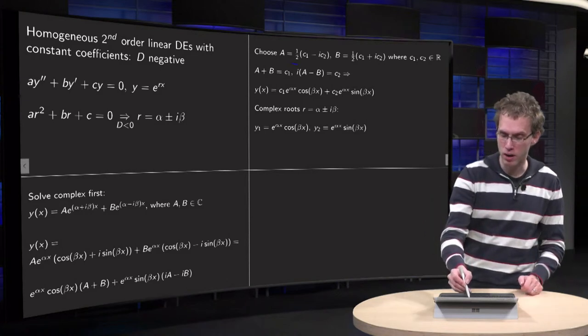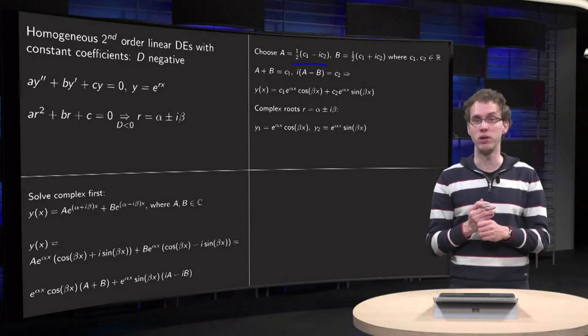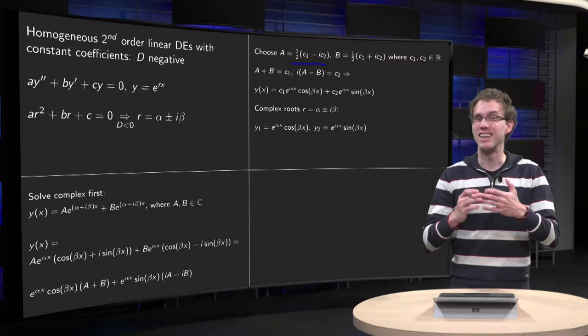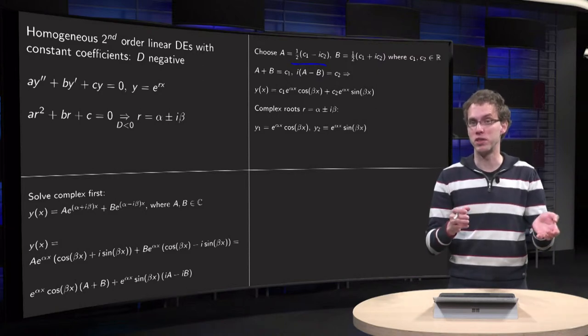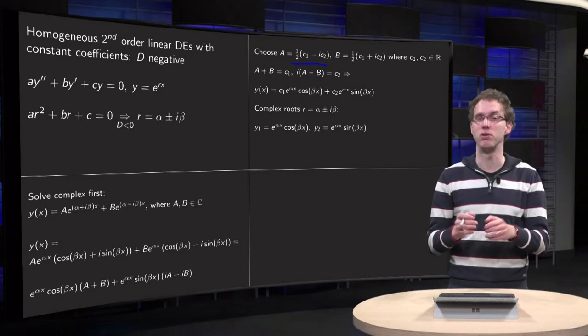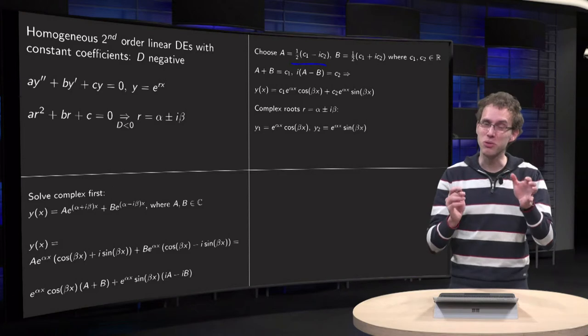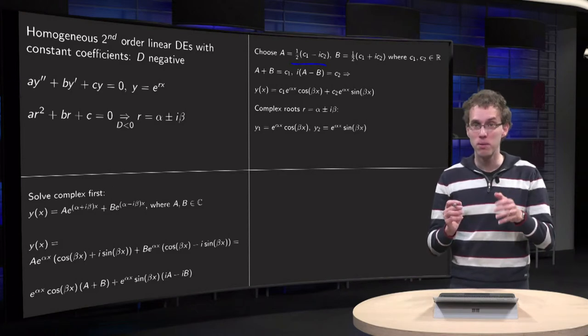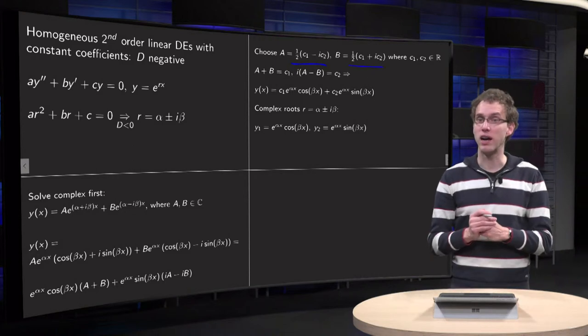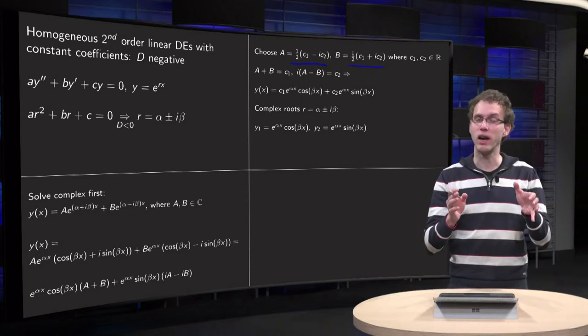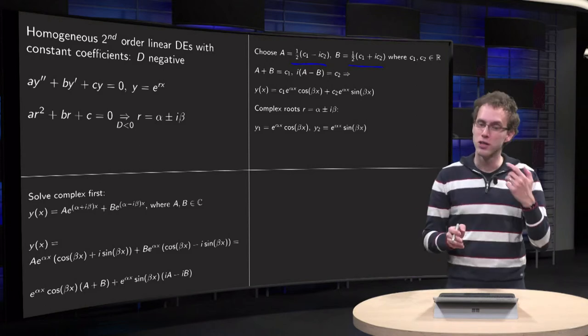So how do you make this choice? Well, you choose your A as ½(c₁ - ic₂), where c₁ and c₂ are real. That's not really restricting your A, because now you have just a real part and an imaginary part. You just gave them strange names. But now given this constant A, you choose B in the following way: B = ½(c₁ + ic₂). So you can choose your A arbitrarily via c₁ and c₂, but that fixes your B.